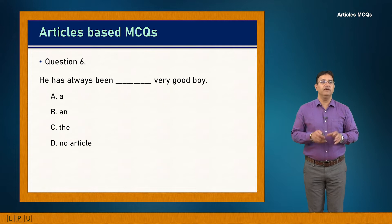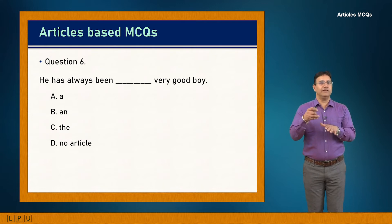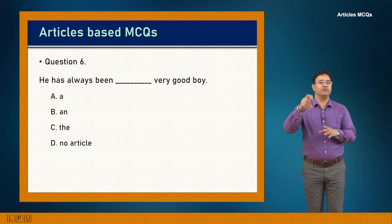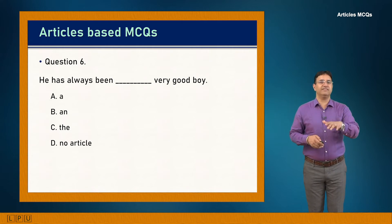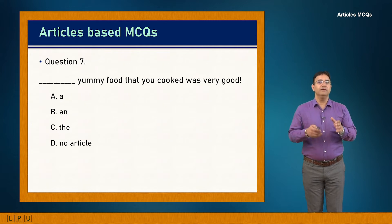Question 6: He has always been dash very good boy. 'A very good boy' is correct — 'the' would require prior context identifying a specific boy. Answer is A. Question 7: A yummy food that you cooked was very good. 'The yummy food that you cooked was very good' — the relative clause 'that you cooked' identifies the food, making it definite. Answer is C.